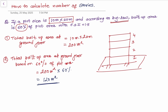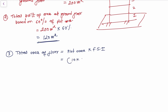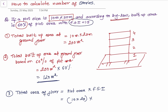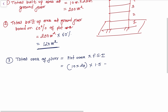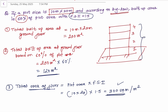The third step is to calculate the total area of floors. Total area of floor is calculated by your plot area multiplied by the FSI. Your plot area is 10 × 20 and your FSI is 1.5, which is given in the problem. Multiply by 1.5 and you get 300 square meters. This is your total area of floor — in the whole building your total area of construction is 300 square meters.